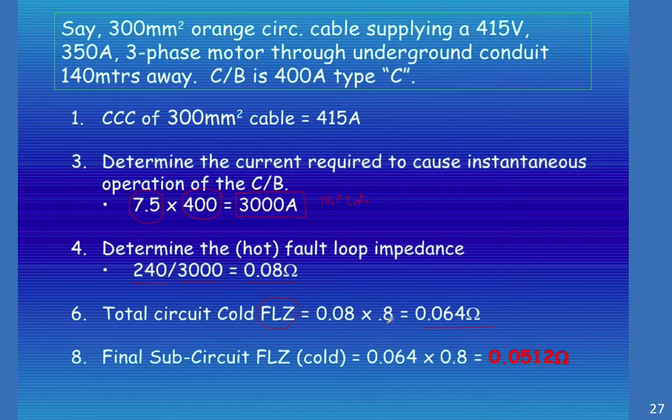The 0.08 being 80%. So final sub-circuit cold will be 0.064 × 0.8. We now have a final impedance cold at 0.0512 ohms.